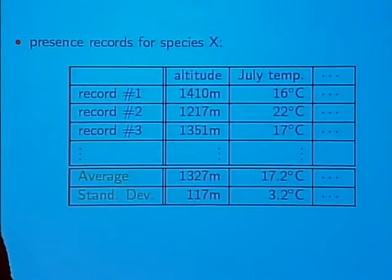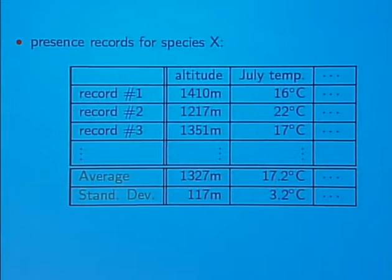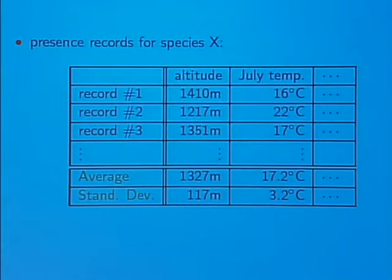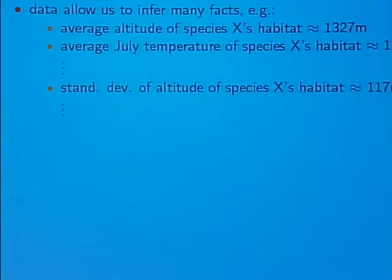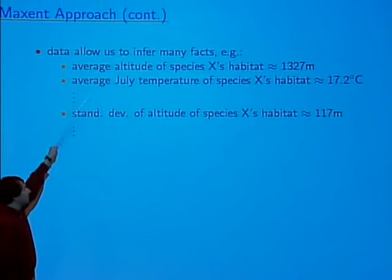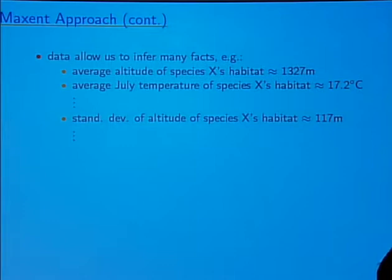The average altitude is about 1,327 meters, and similarly we can take the average of the July temperature. A statistics book would then tell you to compute the standard deviation and so on. We can compute these statistics from the data, and we're used to thinking of these numbers as telling us something about the records we'd get if we were able to sample more from this distribution.